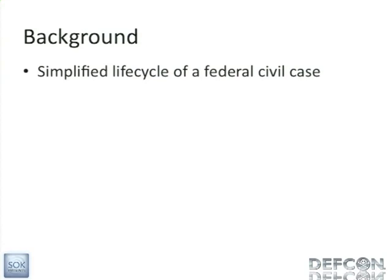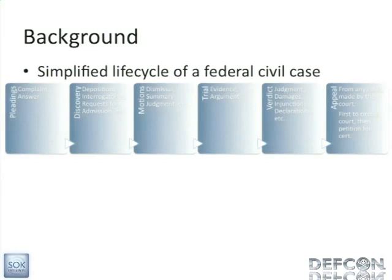The life cycle of a federal civil case starts off when someone gets mad and wants to sue someone else. That's called pleadings. Some guy will file a complaint and the other person will have to file an answer to that complaint — in other words, 'you wronged me,' 'hell no, I didn't' — and then the battle is joined.